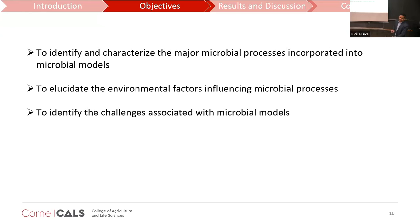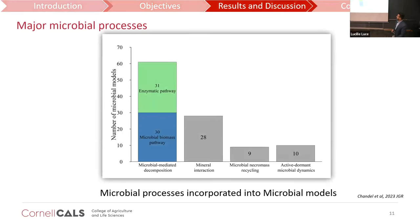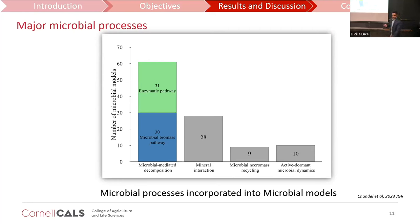The objectives are: to identify and characterize major microbial processes incorporated into microbial models; to elucidate the environmental factors influencing microbial processes; and to identify challenges and conclude with recommendations. After reviewing 71 models, I found four major microbial processes: microbial mediated decomposition, mineral interaction, microbial necromass recycling, and active and dormant microbial dynamics. Some models have an enzymatic pathway with an extra pool of enzymes released by microbes, while 30 models have only a microbial biomass pool.